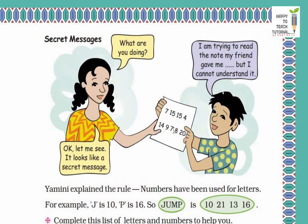Look here, the two children are talking about a secret message. He asks 'What are you doing?' And he says 'I am trying to read the note my friend gave me but I cannot understand it.' She says 'Okay, let me see. It looks like a secret message.' Then Yamini explains the rule: numbers have been used for letters. Numbers have been used in place of letters.